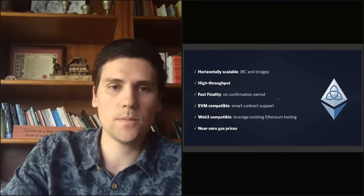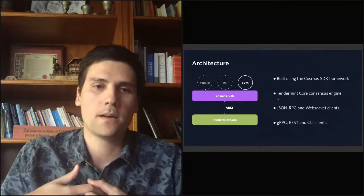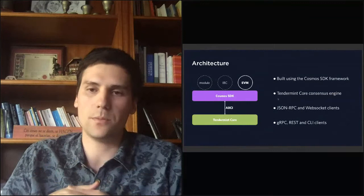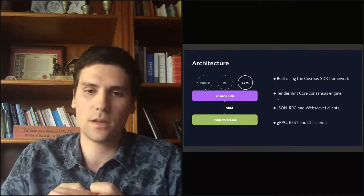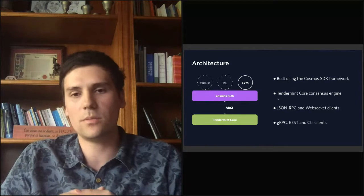Let's talk about the architecture of the project. Ethermint is built using the Cosmos SDK framework for building application-specific blockchains, which relies on Tendermint Core as a consensus engine, used for peering, networking, and consensus. It communicates through ABCI.